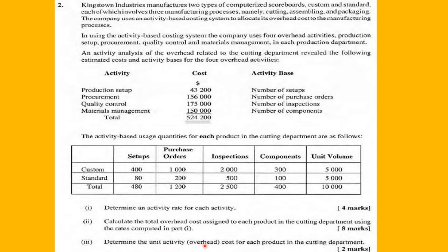Part three is to determine the activity overhead costs per unit for each product in the cotton department. Now let's see what the data says. Kingston Industries manufactures two types of computerized scoreboards — custom and standard — each involving three manufacturing processes: cutting, assembling, and packaging. The company uses an activity-based costing system to allocate its overhead costs to the manufacturing processes, but only for the overhead, not for raw materials or labor.